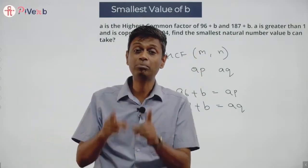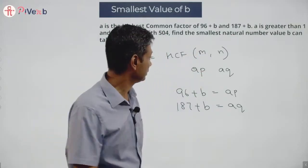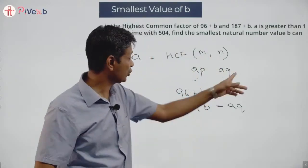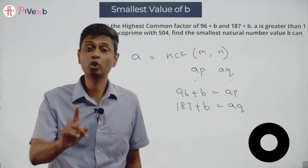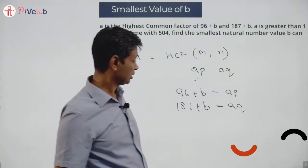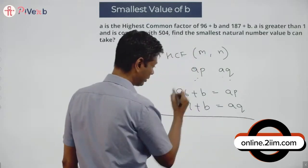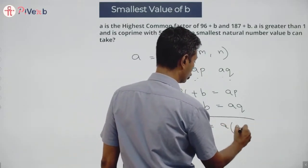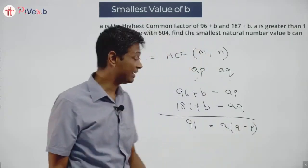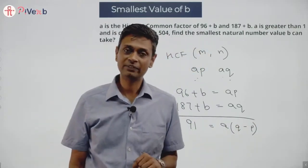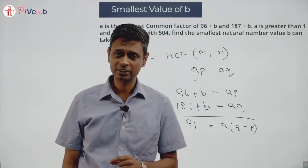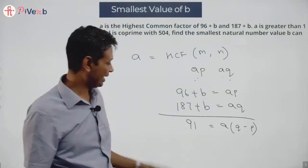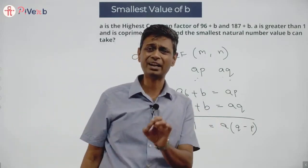The beautiful idea here is: if A divides M and A divides N, then A divides M minus N. Subtracting gives N minus M equals AQ minus AP equals A times (Q minus P). And 187 minus 96 is 91. So A divides 91.